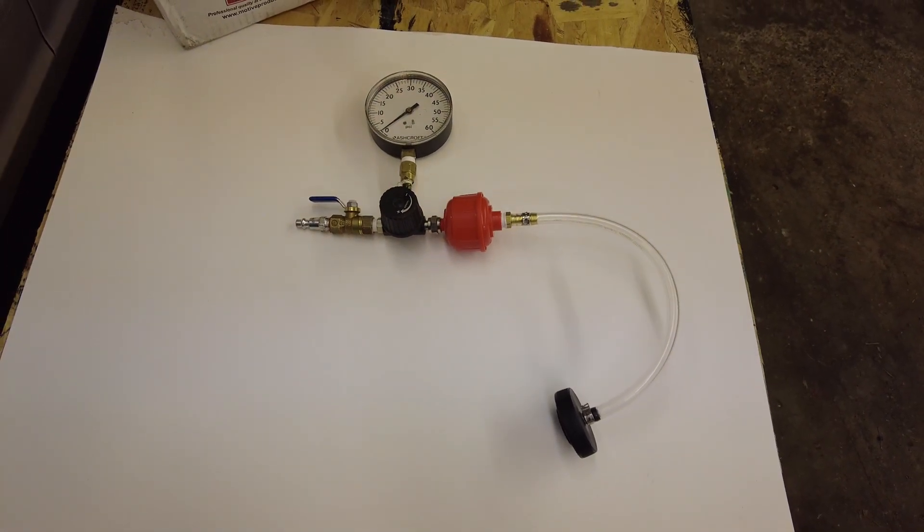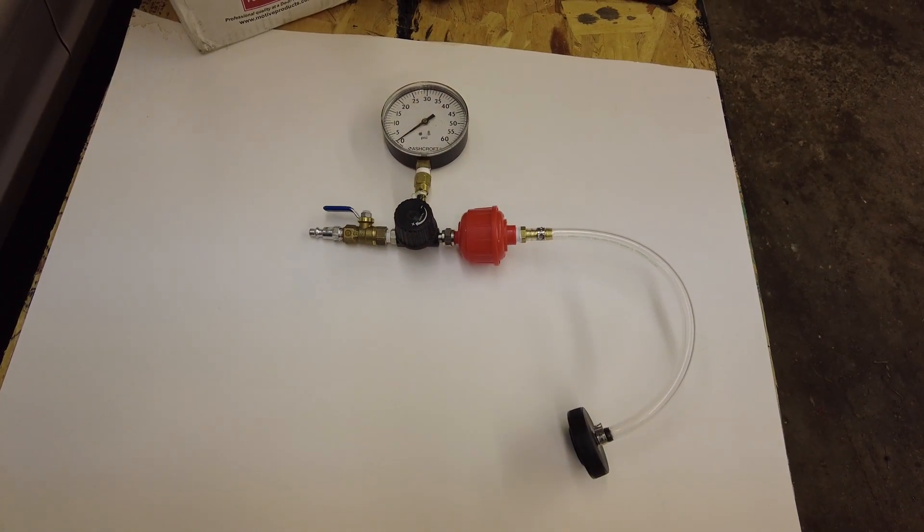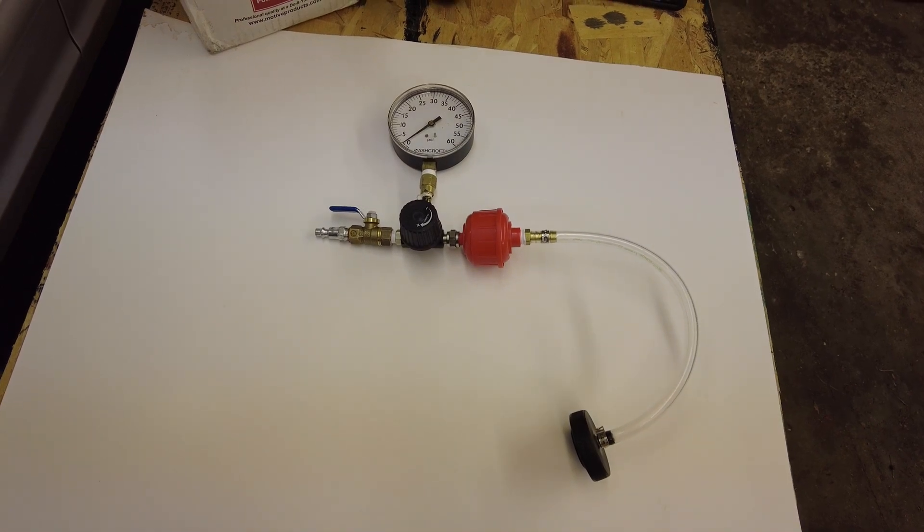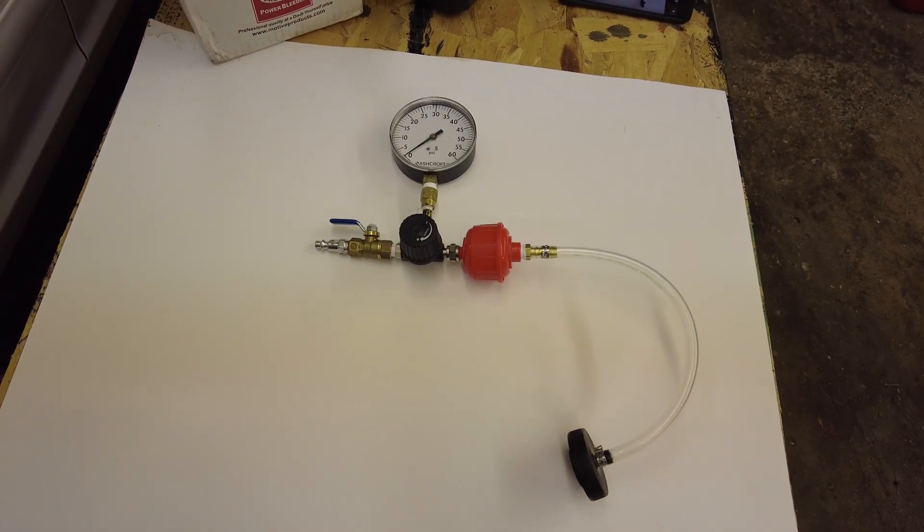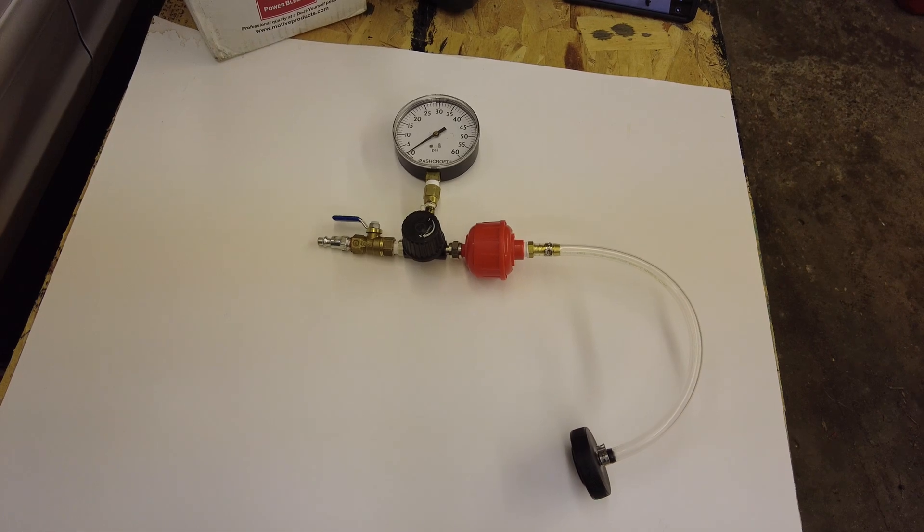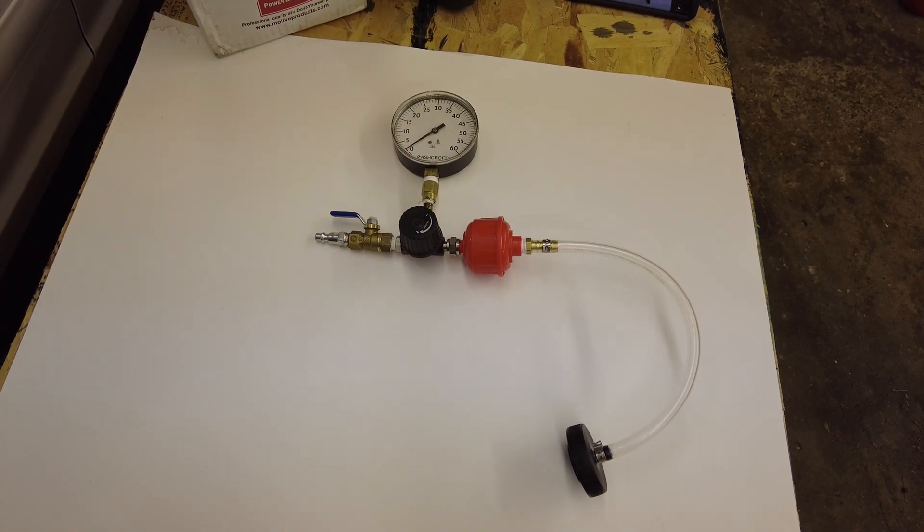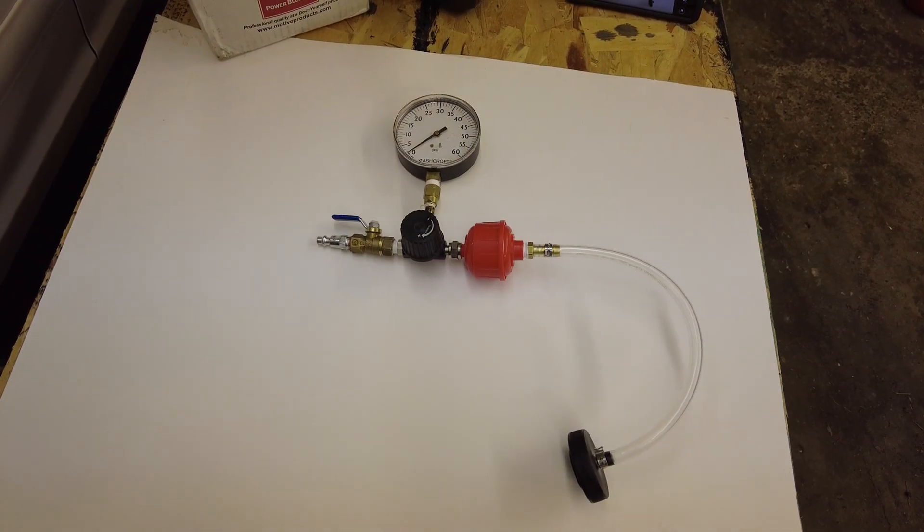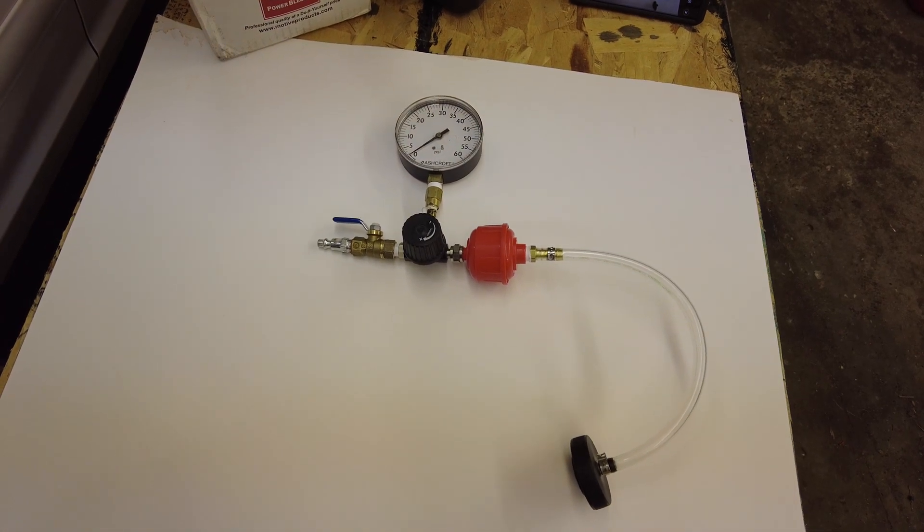Alright guys, I'm going to show you a little hack that I discovered after doing some brake work on a 2008 Ford Crown Victoria. Man, I was having a heck of a time bleeding the ABS module and getting all the air out of the entire system.